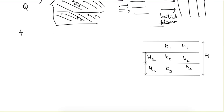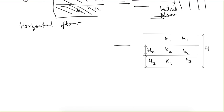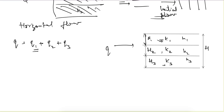Let's look at the horizontal flow case first. The total discharge q passes through the soil. Depending upon the permeability, the discharge through each layer will be different. For continuity, q equals q1 plus q2 plus q3. If permeability is more, velocity of flow is more and discharge is more; if permeability is less, velocity and discharge are both less.